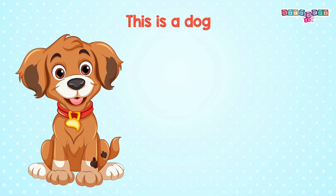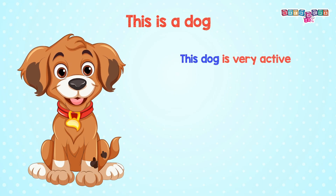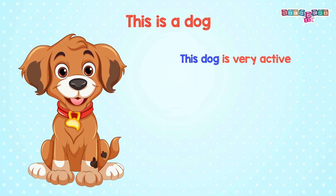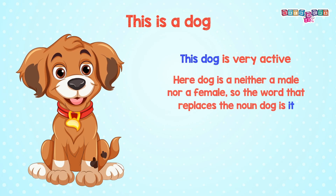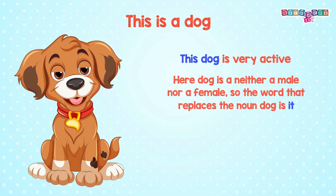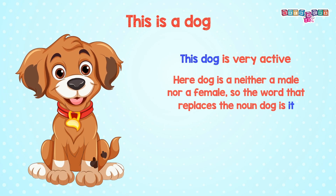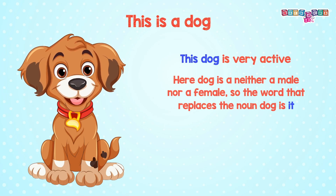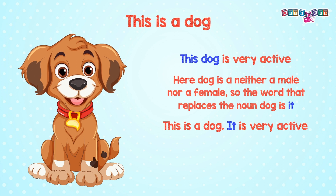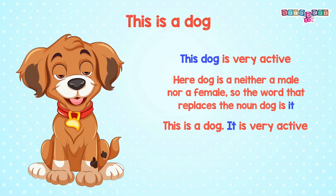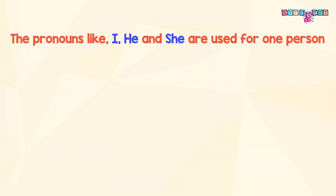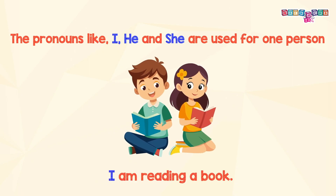This is a dog. This dog is very active. The dog is neither a male nor a female, so the word that replaces the noun 'dog' is 'it.' So the sentence will be: This is a dog. It is very active. The pronouns like I, he, and she are used for one person.